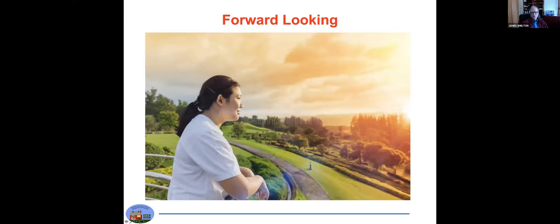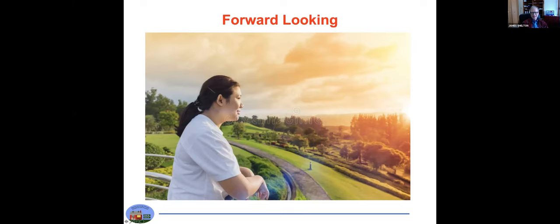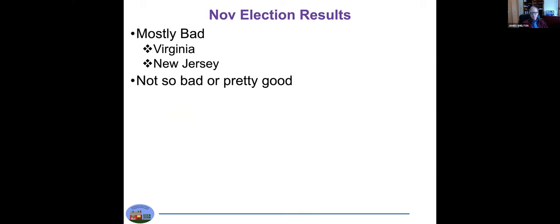A little bit more forward looking. Even though the election results were bad in Virginia and New Jersey, they were actually not so bad or pretty good in three other states, SPAN states. Pennsylvania somewhat mixed, definitely some positives in these down ballot things. Georgia definitely mayoral races, Michigan definitely as well.